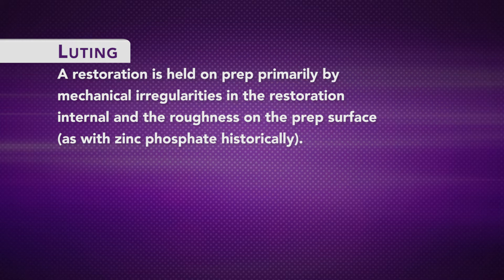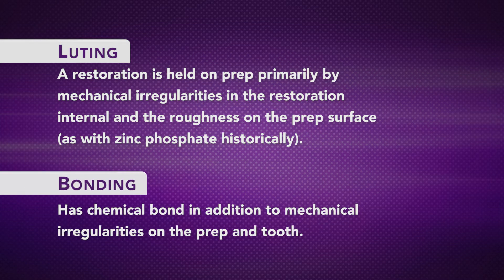If I make the surface of the prep rough, I have a lot of surface area — up and down in all those various roughnesses. The bottom line is more surface area. Then if I bond, that more surface area means a better bond. So I could easily combine luting, and the bottom concept has a chemical bond in addition to mechanical irregularities on the prep and the tooth.